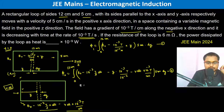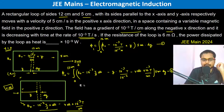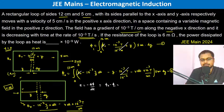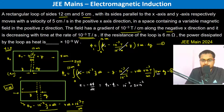We know that EMF equals minus d phi by dt. So we compute phi 2 minus phi 1. Looking at the terms, the B naught terms and the position-dependent terms cancel out. What remains is 10 to the power minus 3 into 5 centimeter into 5 into 10 to the power minus 2 meter into dy, and integrating dy gives y, so this becomes 12 into 10 to the power minus 2.